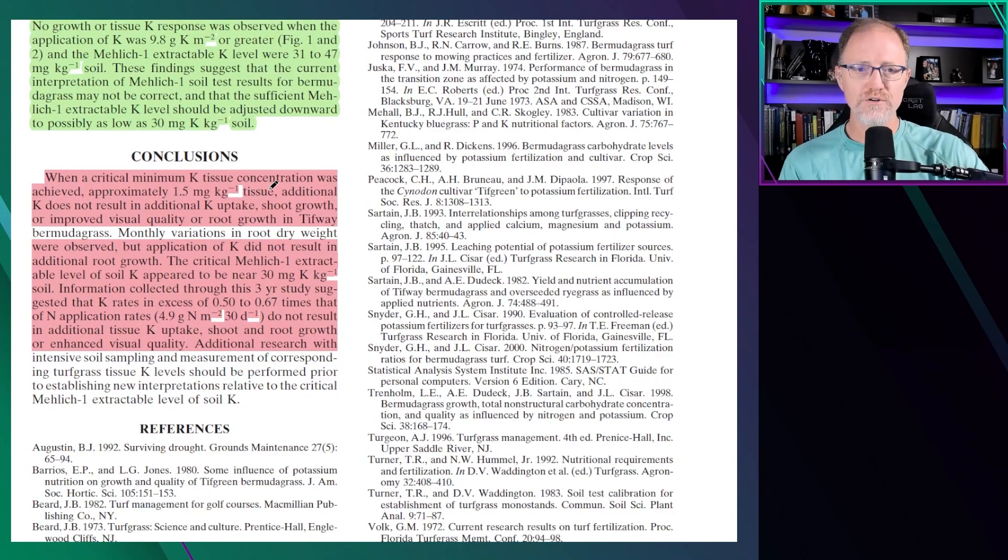Now the conclusions. When a critical minimum potassium tissue concentration was achieved, which was approximately one and a half percent—that's one and a half percent tissue K—additional potassium does not result in additional potassium uptake, shoot growth, or improved visual quality or root growth in Tifway Bermudagrass. So once you hit one and a half percent, that's it. There was no more increase in this particular study.